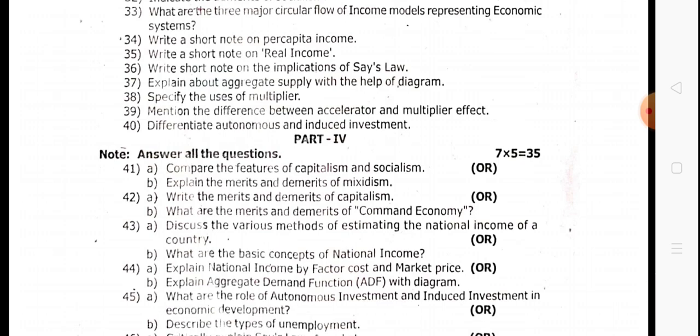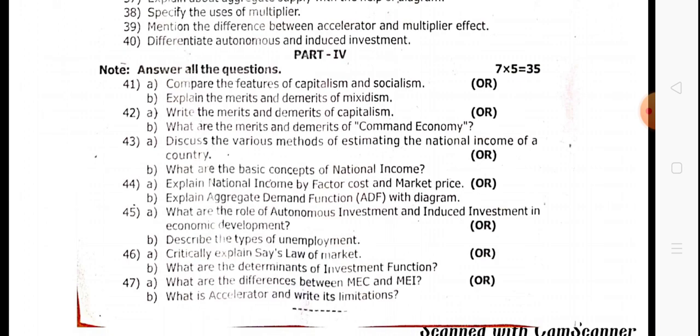Five-mark questions: question — difference between autonomous investment and induced investment. Book pack. Compare the features of capitalism and socialism. Next, explain the merits and demerits of mixed economy. Write the merits and demerits of capitalism. What are the merits and demerits of command economy?